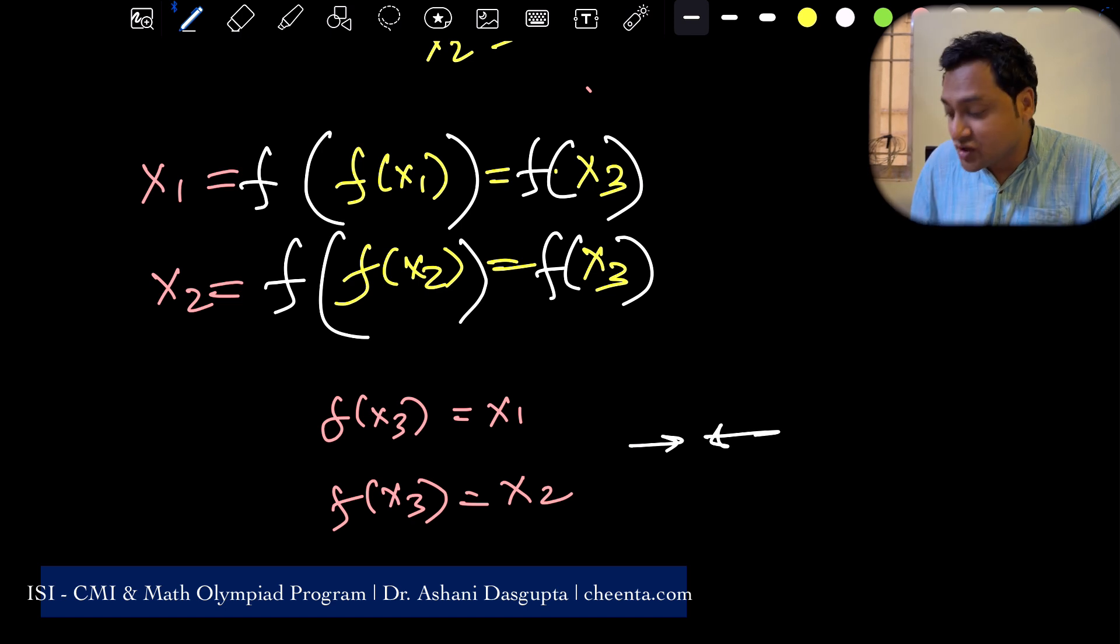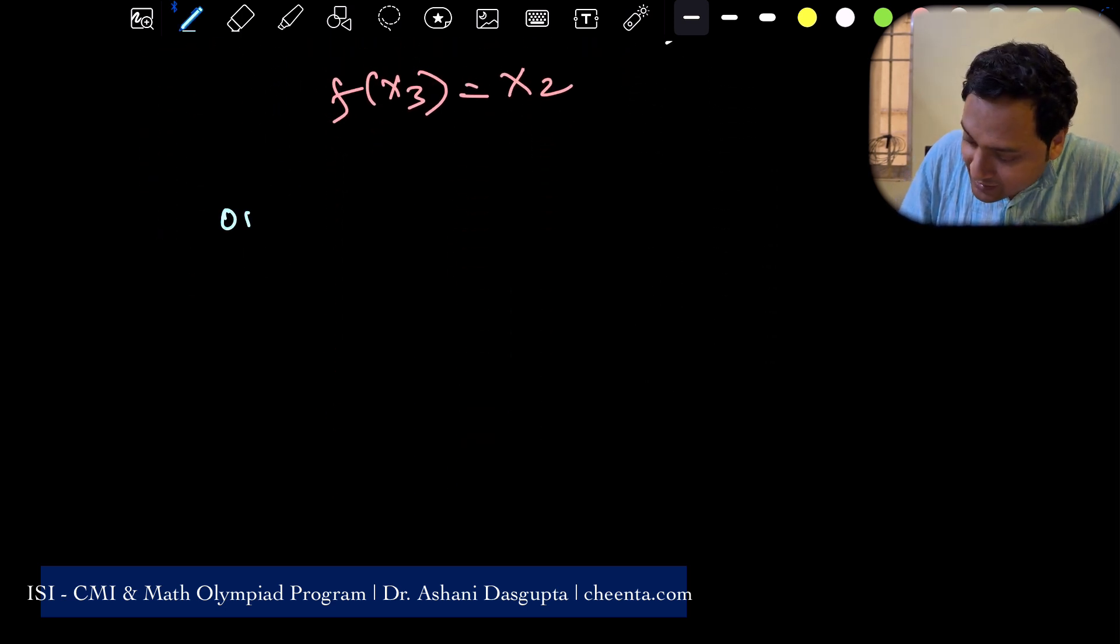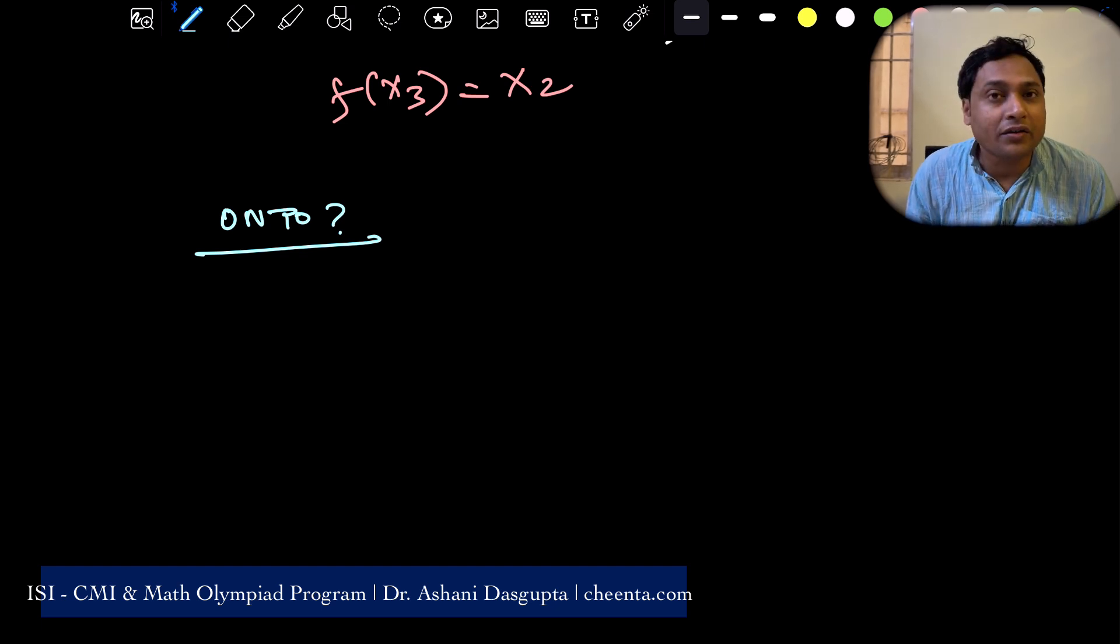Therefore, the function is one to one for sure. Now, the question is, is the function onto? Let's try it by contradiction.